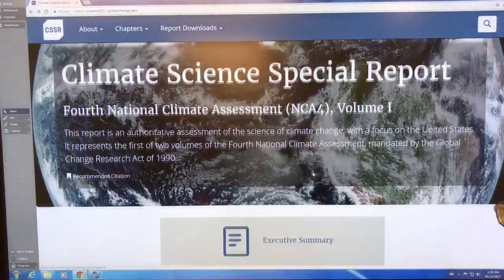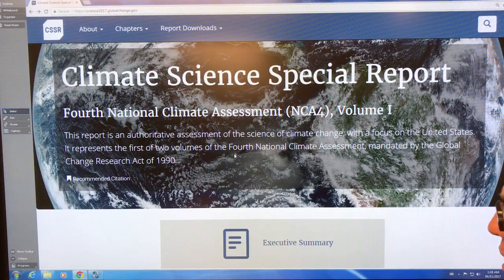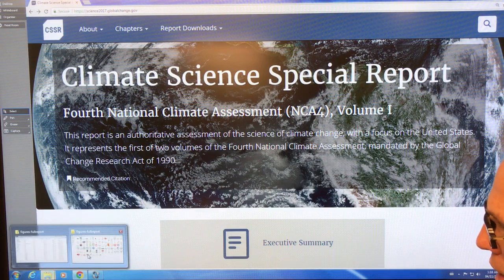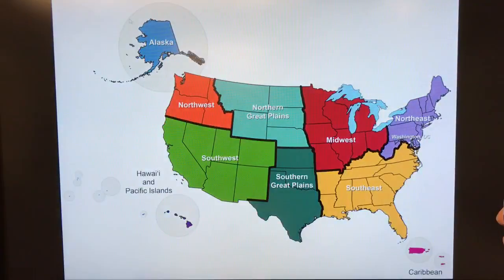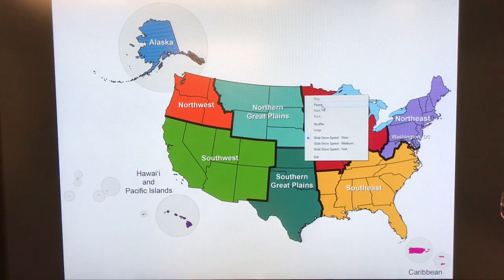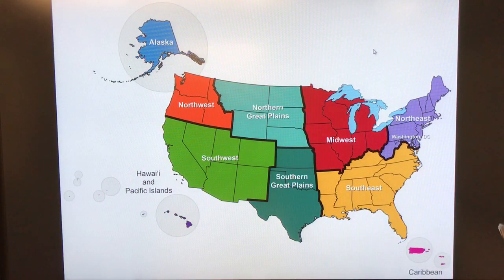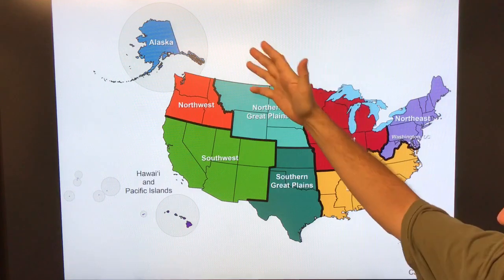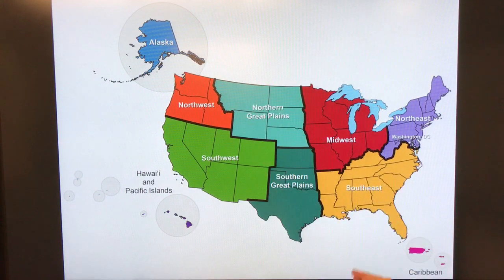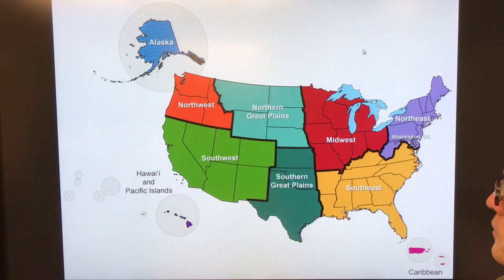I'm going to discuss a lot of the diagrams that are in this report. It just came out, so I haven't had a chance to look at it in great detail, but I will go over some of the key points. It divides the US up into different categories and territories — certain regions. I'm basically just showing you the figures.